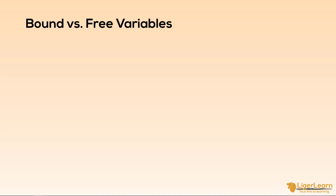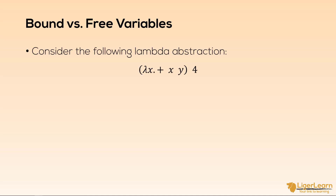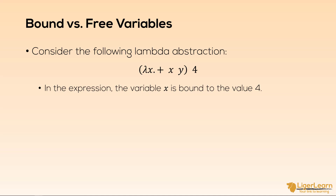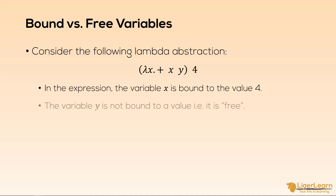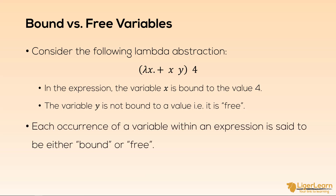Let's consider the following lambda expression. We have lambda x and the function which adds two variables, x and y. We are also applying the constant 4 to the expression. A binding links a variable name to a value, and so in this expression the variable name x is bound to the value 4, because the lambda abstraction defines the variable name in the abstraction as x. In contrast, within this particular expression, we cannot see lambda y anywhere, and so the variable y is not bound to a value — it is said to occur free in the expression. Each occurrence of a variable within an expression is said to be either bound or free.